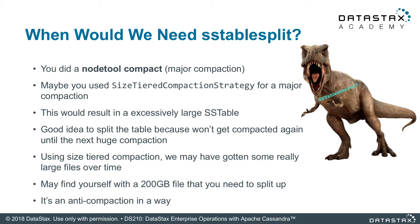So when that happens to you, luckily we have a way to get out of it. Now that may not be the only situation. For instance, if you have a situation where size-tiered compaction gets out of control, you have one huge file sitting over here that just won't ever get compacted again. Sometimes you want to do a little manipulation on those files to break them up into chunks.